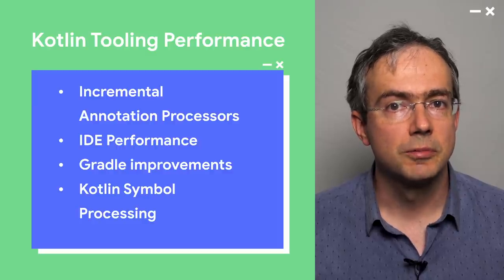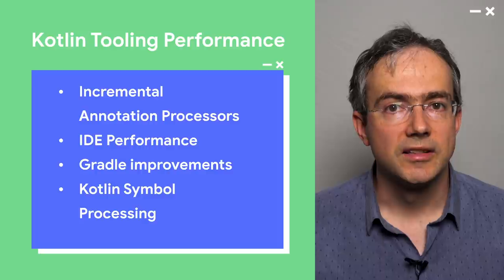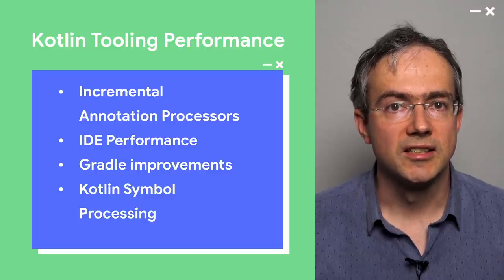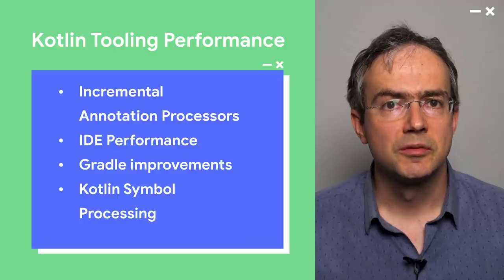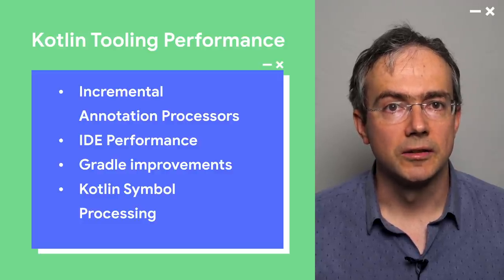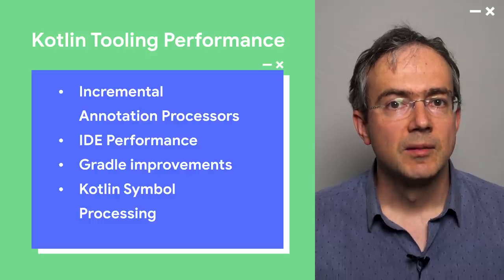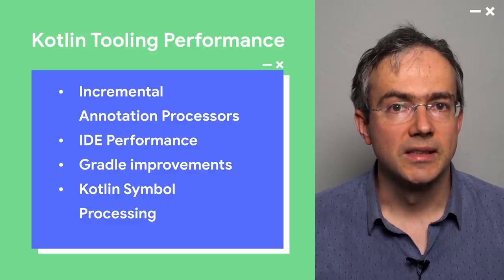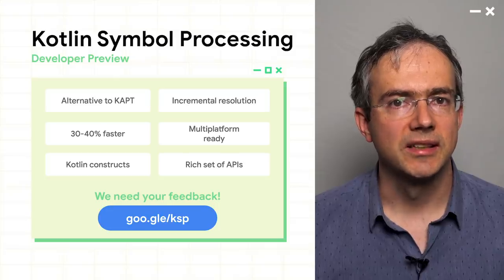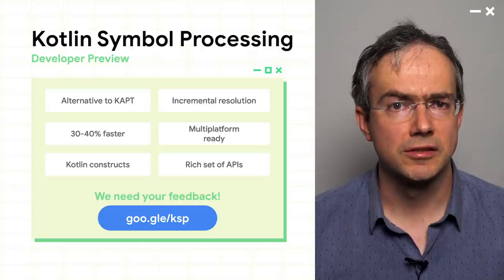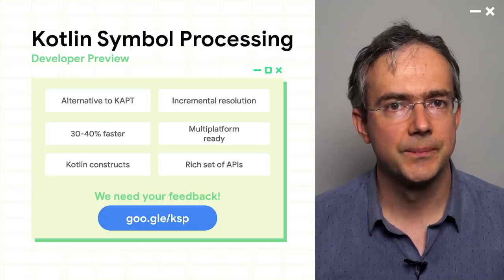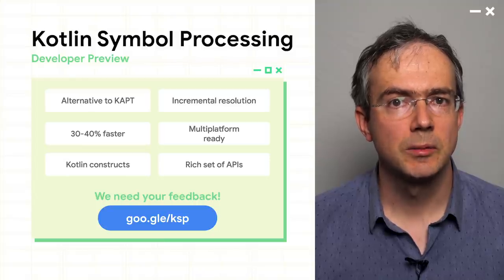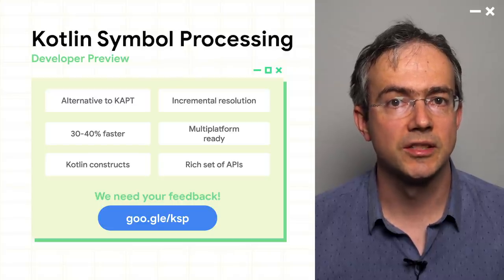One topic around performance I want to talk about is a new project called Kotlin Symbol Processing. Our data shows that many Kotlin builds are significantly slowed down by annotation processors. The Kotlin toolchain needs to perform lots of magic to make these run seamlessly between Java and Kotlin. My team has been working on Kotlin Symbol Processing, or KSP, as an alternative. Instead of using KAPT, developers can now build lightweight plugins that run as part of the Kotlin compilation process. KSP allows for incremental resolution of symbols, and from porting some existing annotation processors, we're seeing 30% to 40% faster compilations. KSP comes with a rich set of APIs and provides access to all Kotlin symbols, including ones not available in Java, such as properties and function types.